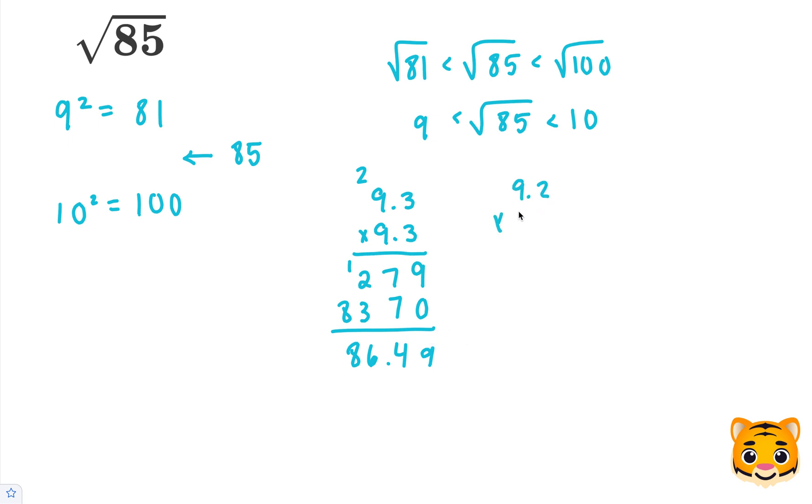Let's try 9.2 times 9.2 and see if that's a little bit closer. 2 times 2 is 4. 9 times 2 is 18. Add our 0. 9 times 2 is 18, carry the 1. 9 times 9 is 81, plus 1 is 82. When we add these together, we end up getting 84.64.